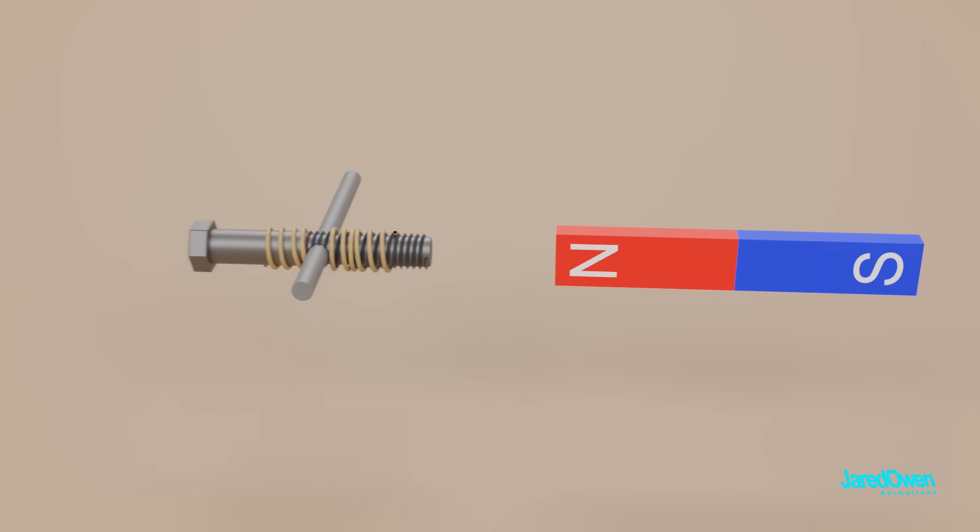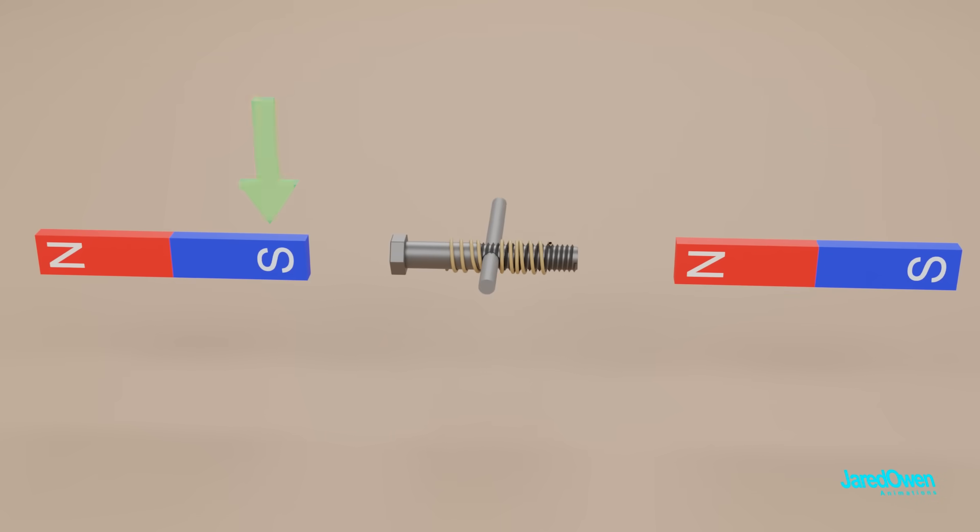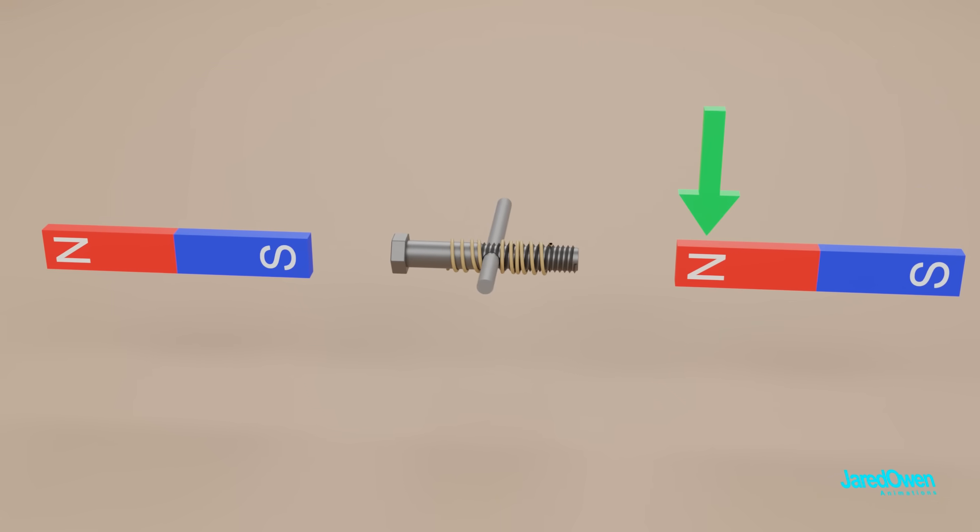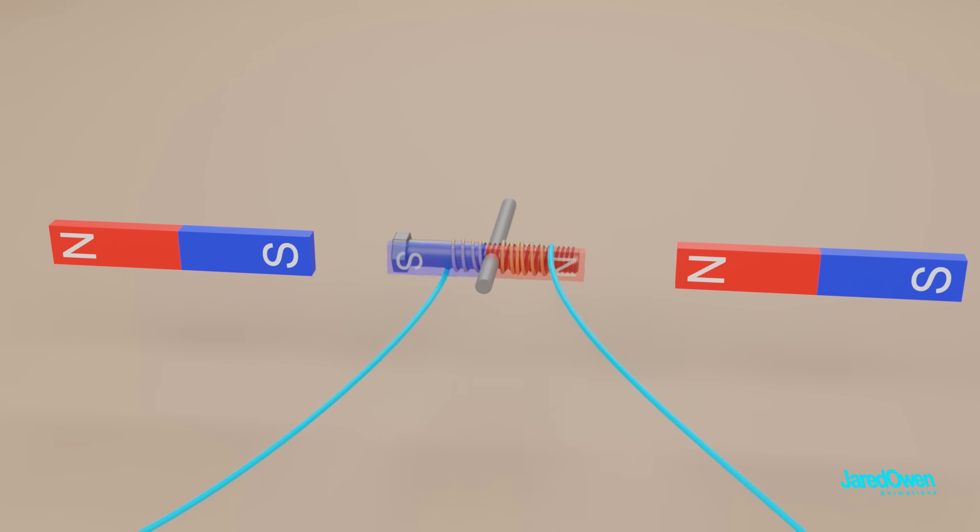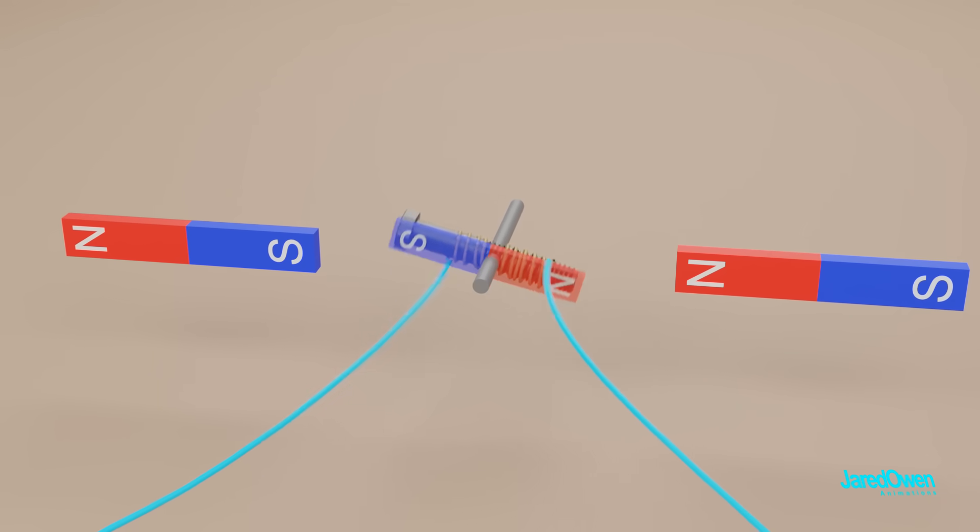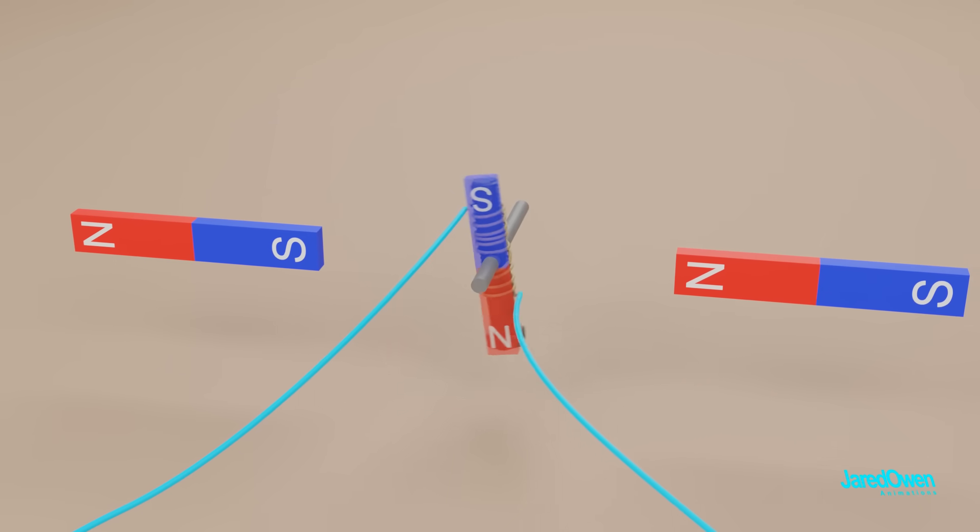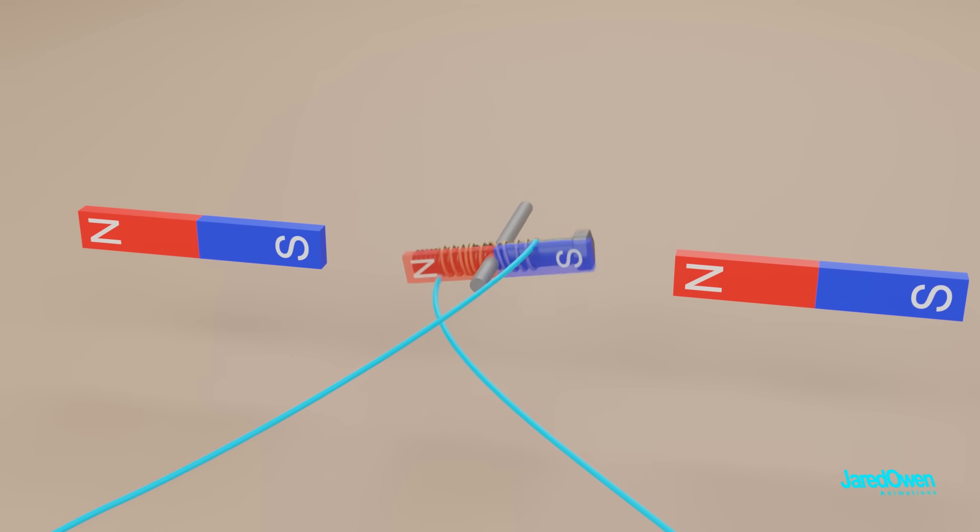To make this stronger, let's bring in another permanent magnet on the side. Notice how this side has the south pole towards the center, and this side has the north pole towards the center. The side magnets work together to spin the one in the middle. This right here shows the very basics of an electric motor, but we need to make a few improvements.